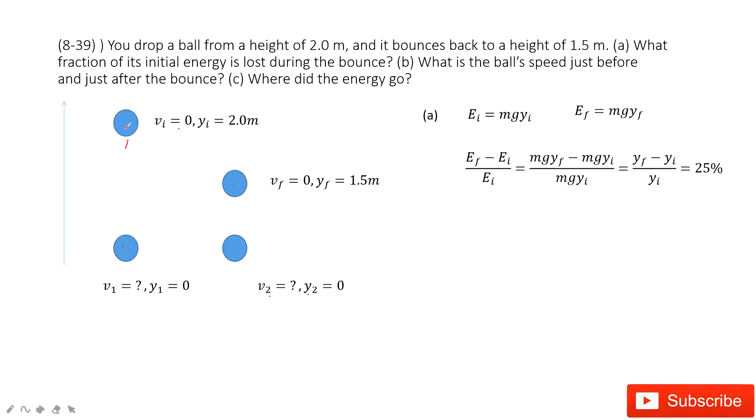This is a very simple process. The ball just drops down and then moves back up. First, we need to find the fraction—the percentage of its initial energy that is lost during this bounce.